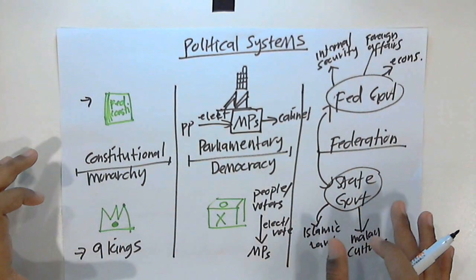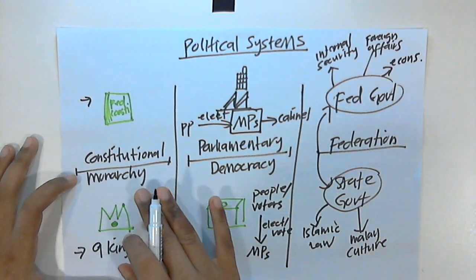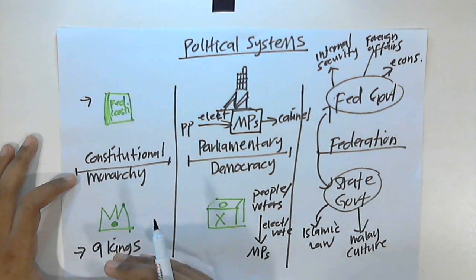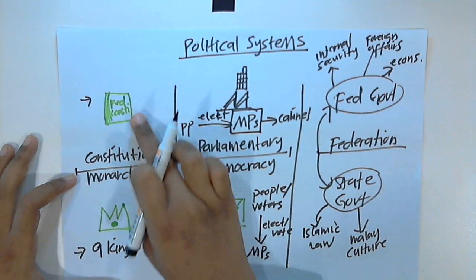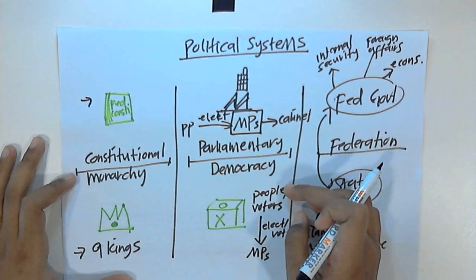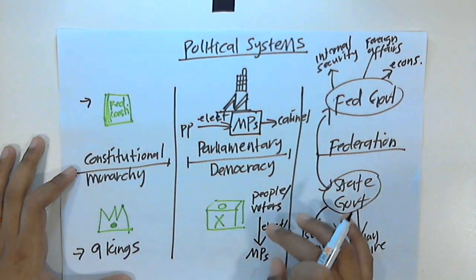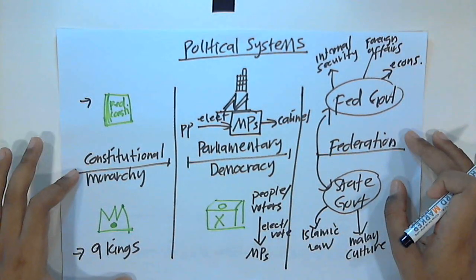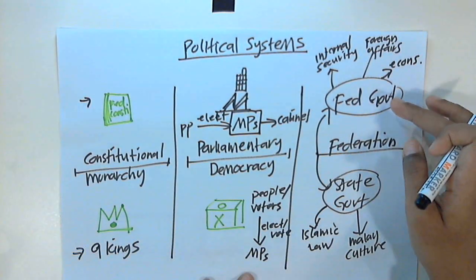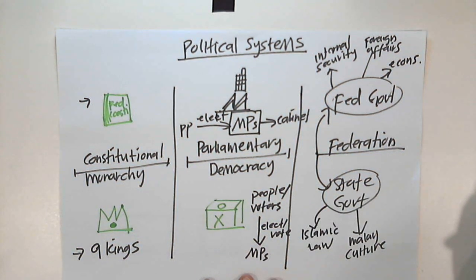In summary, there are three political systems practiced in Malaysia. The first is constitutional monarchy, where we have a monarch ruling the country but whose power is determined by the federal constitution. Second, we have parliamentary democracy, where the people elect their own representatives to parliament, and these members of parliament become part of the cabinet. The last one is federation, which is a system that distributes and divides power between the federal government and the state government.